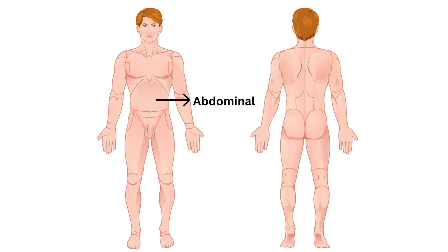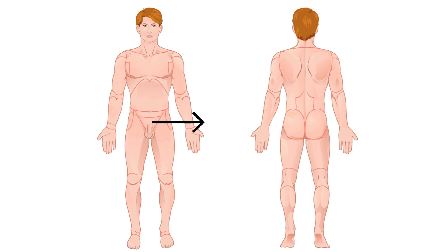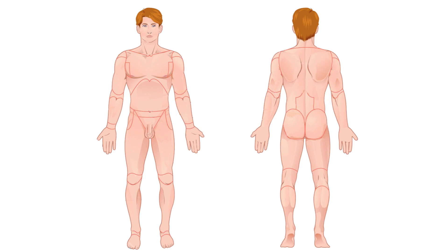16. Pelvic — the region of the body associated with the pelvis. 17. Inguinal — the area near the groin. 18. Pubic — the pubis region. 19. Crural — the shin area. 20. Pedal — the region of the foot.